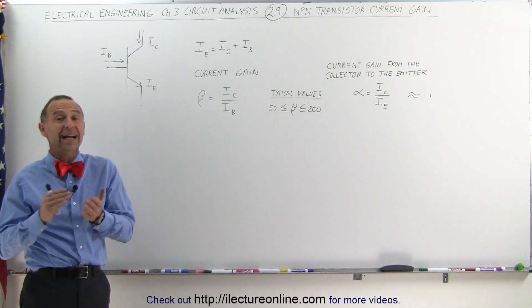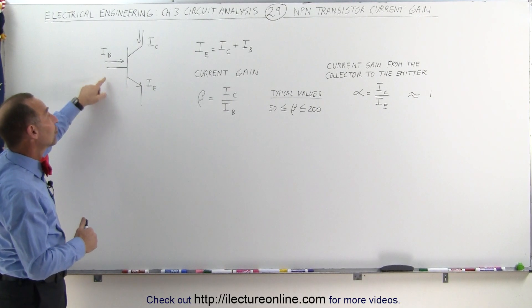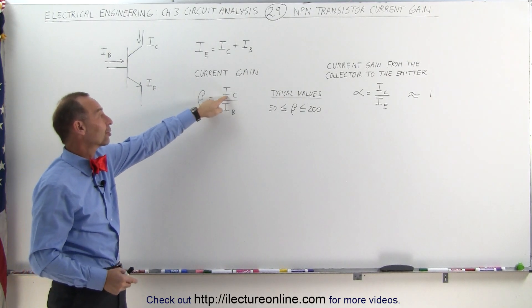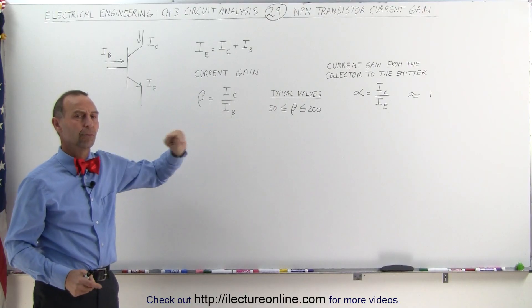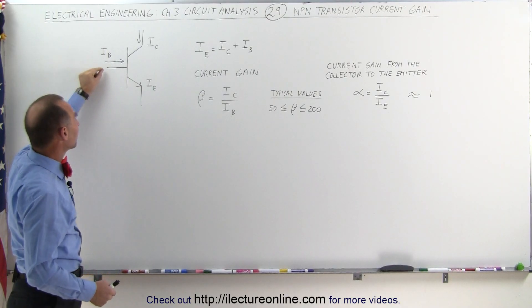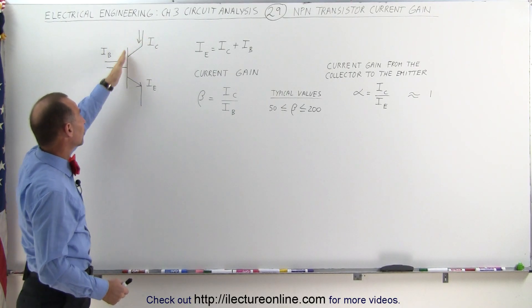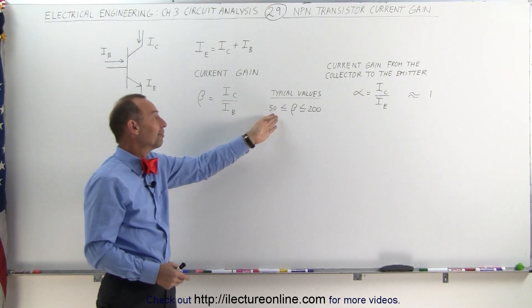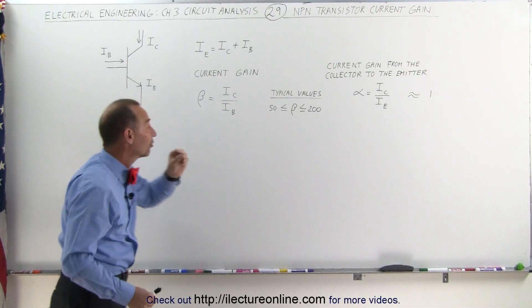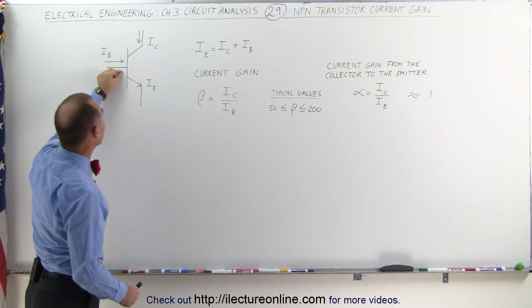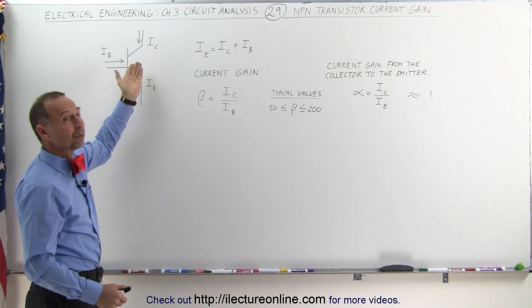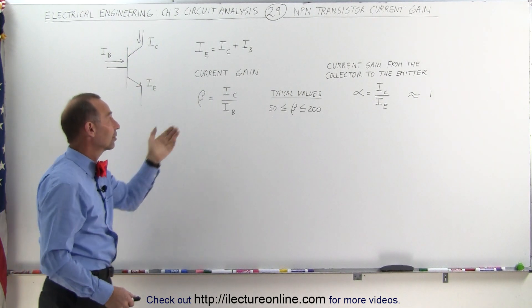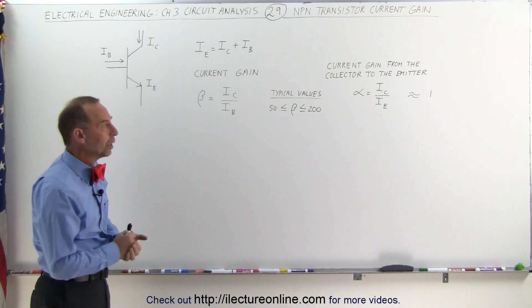There are two different kinds of current gains when we talk about an NPN transistor. The most important one — beta — is the ratio between the collector current and the base current. A very small amount of base current will allow a lot of current to flow from the collector to the emitter. The ratio is typically anywhere from about 50 to 200. For example, if 1 microamp of current flows to the base, 100 times as much — 100 microamps — will flow from the collector to the emitter. That's why we talk about a current gain of 100 to 1.